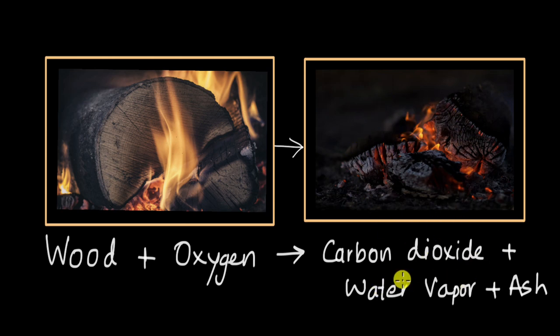So if there is, let's say, 500 grams of wood and oxygen combined, then we will get 500 grams of combined carbon dioxide, water vapor, and ash.